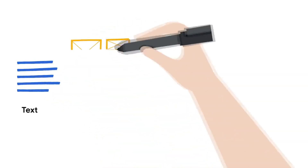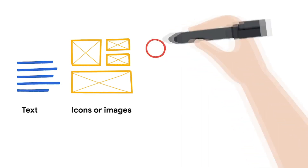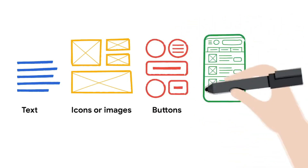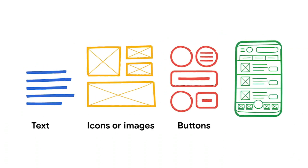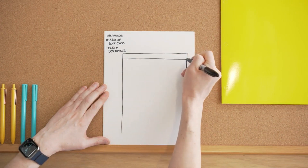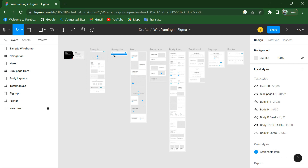First of all, I would like to explain the meaning of wireframe. A wireframe is an outline of a web page or app. It's usually a two-dimensional skeleton outlining what you will include in each view of your web, kind of like a blueprint. Wireframes can be hand-drawn on paper or built out digitally. They are usually used by UX designers and web designers to provide a clear visual understanding of page structure.